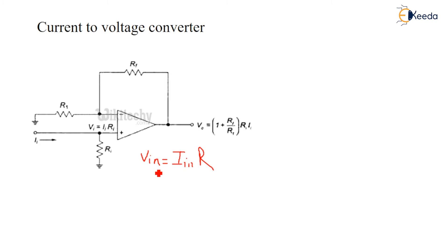But the VIN is equal to what? IIN into R. So what I'll do? I'll substitute this VIN instead of this VIN which is here.